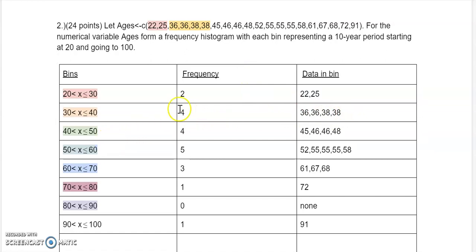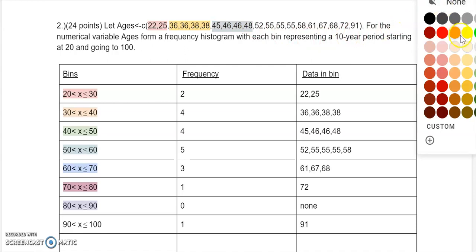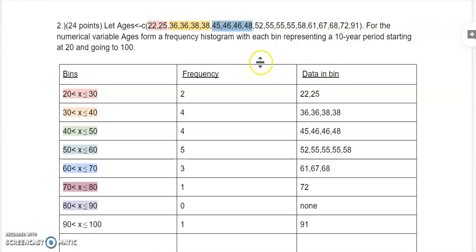Then, from 40 to 50. I see it at 45, 46, 48. There's four of them. So you put frequency 4. Then, from 50 to 60. So the 50, 52, 55, 55, 58.